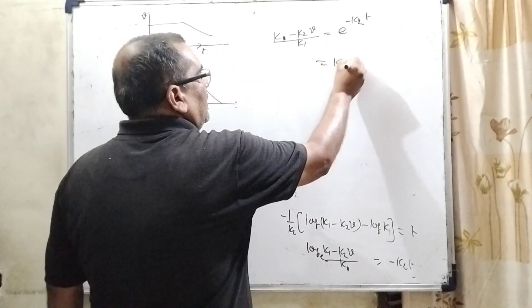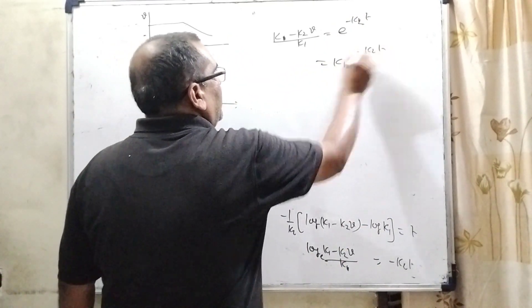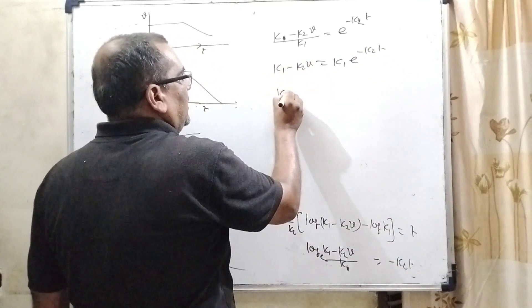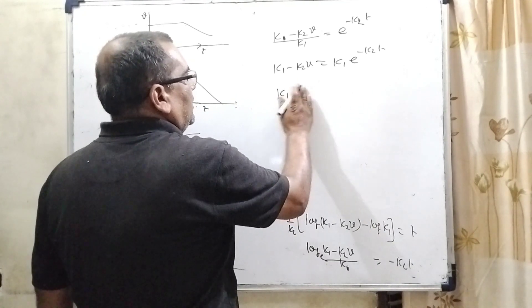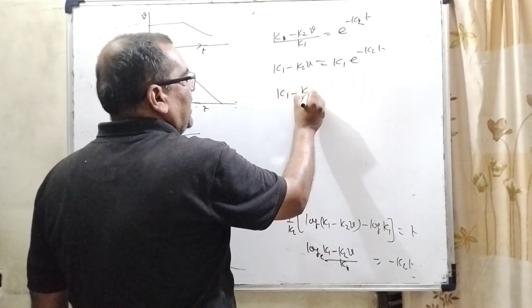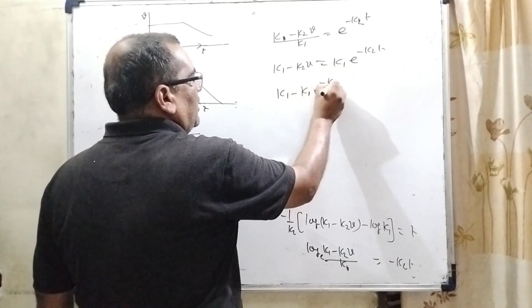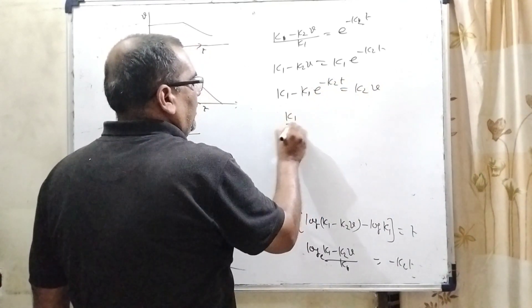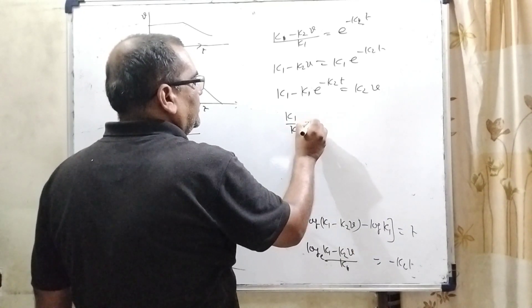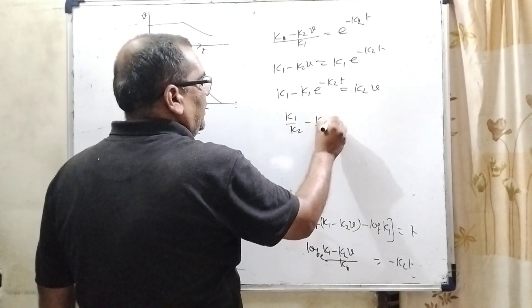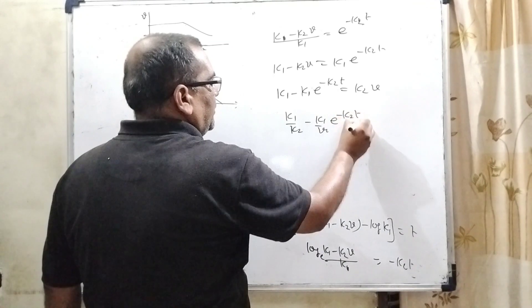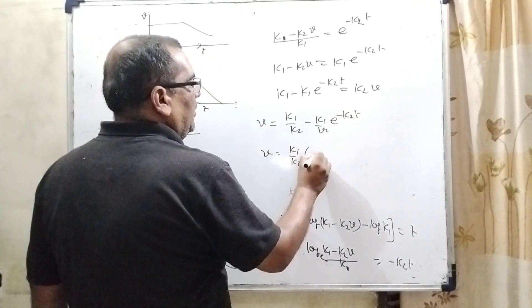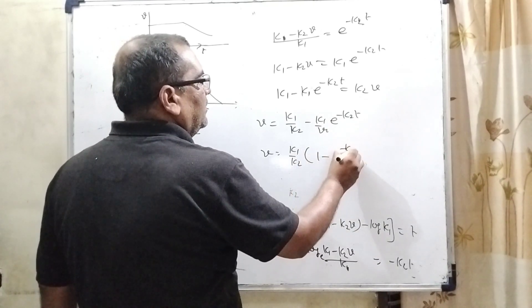K1 e raise to power minus K2T, K1 minus K2V here K1 minus transposing this term to the left side then K1 e raise to power K2T is equal to K2V. Now, K1 upon K2, K1 upon K2 e raise to power minus K2T is equal to V. Then K1 upon K2 get common 1 minus e raise to power K2T.